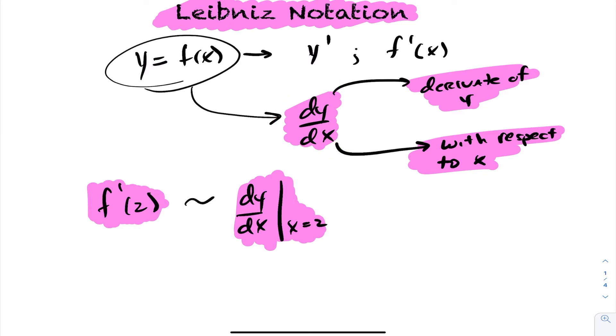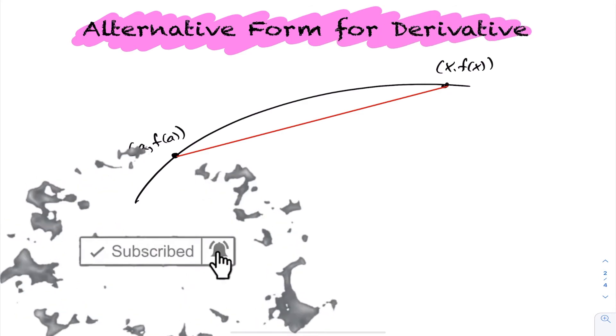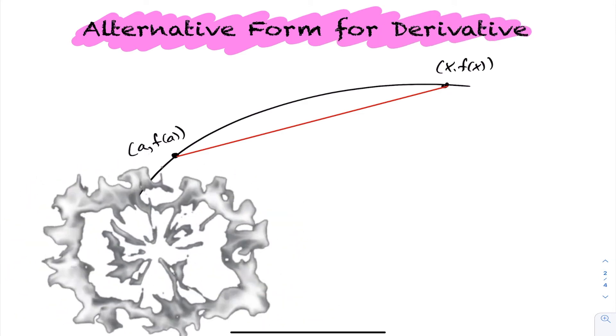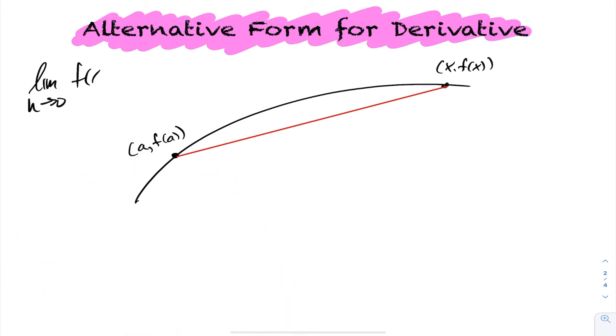I want to take a look at an alternative form for the derivative. We've been looking at the limit as h goes to 0 of f(x+h) minus f(x) over h. Now, there's another form that is available, and it's nice to have two different ways, because sometimes the problem is easier.